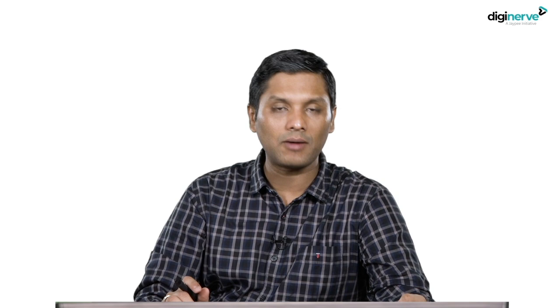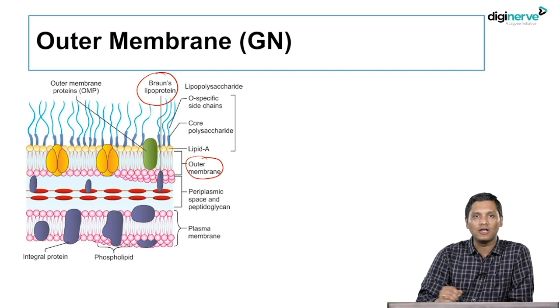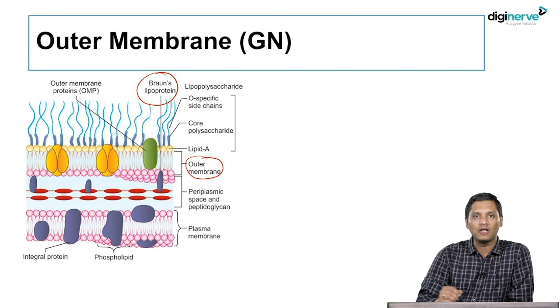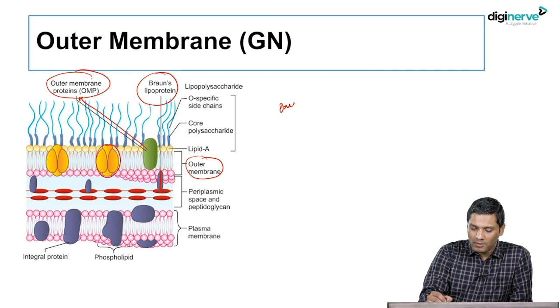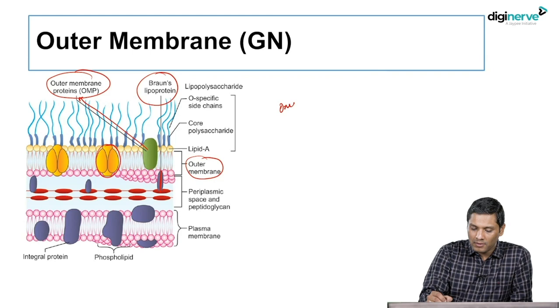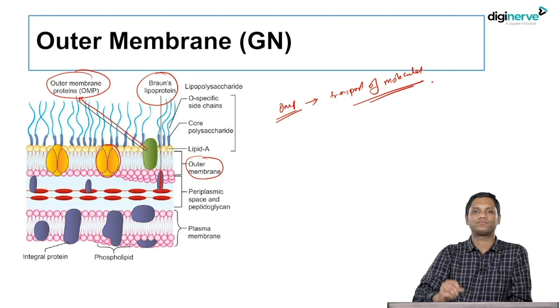The next structure in gram-negative cell wall is the outer membrane. The outer membrane contains various proteins: one is called Braun's lipoprotein, which connects the outer membrane to the peptidoglycan layer. Another protein is the outer membrane protein. Three outer membrane proteins are joined to each other to form a pore-like structure, which helps in transport of various molecules across the cell wall — these pores are formed by three molecules of proteins.